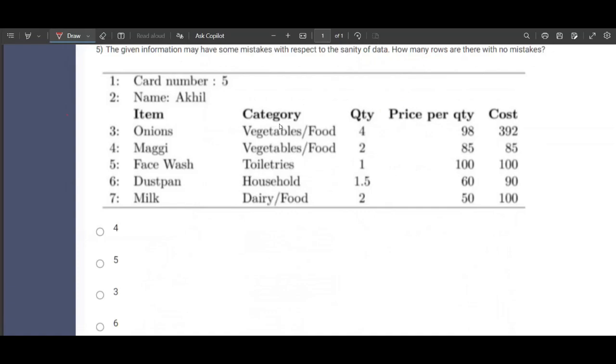Card number five, this is correct. Name is Akhil, this is also right. Onions, vegetables or food for quantity 98. This is perfect because 4 into 98 is 392. Maggi, vegetables or food, 2 into 85, this is a mistake.